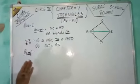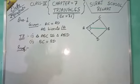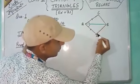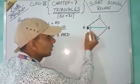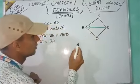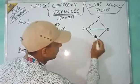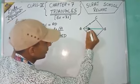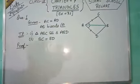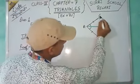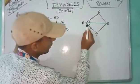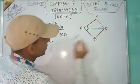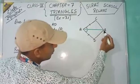Today I am going to show exercise 7.1. Our first question is: we have given a quadrilateral ACBD, in which side AC is equal to AD, and AB bisects angle A. We have to show that triangle ABC is congruent to triangle ABD, and also that BC equals BD.